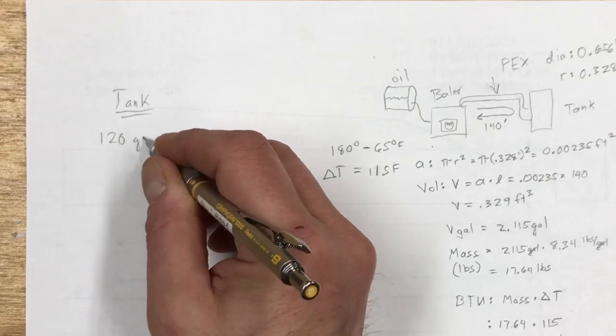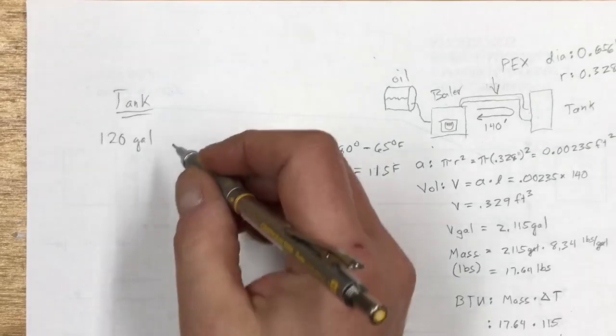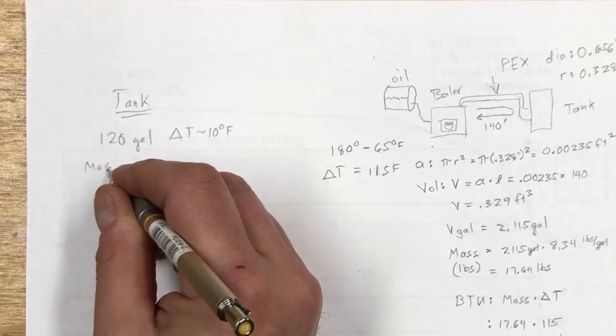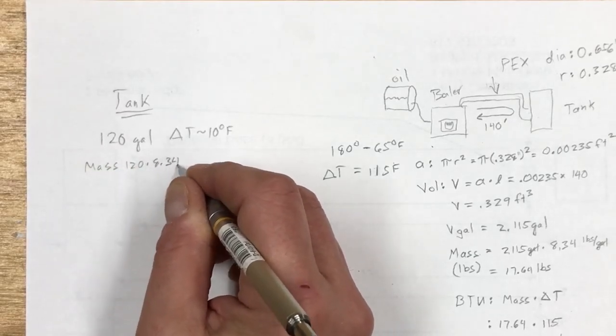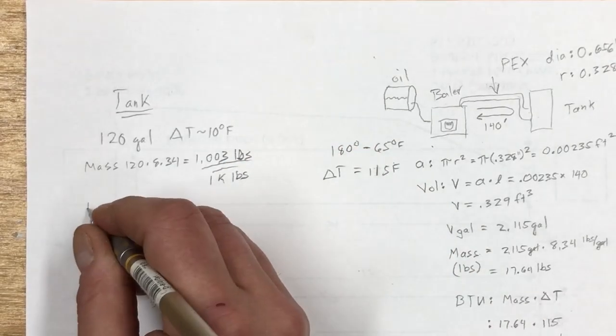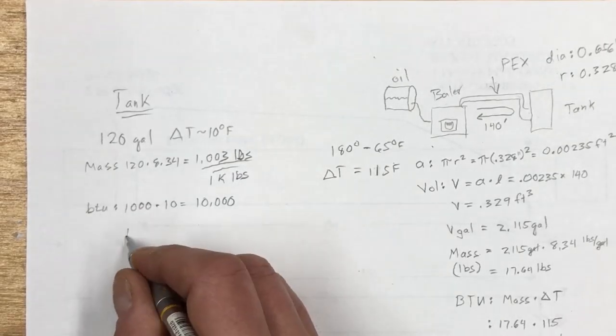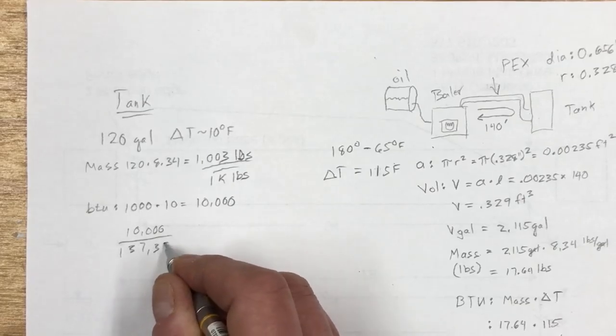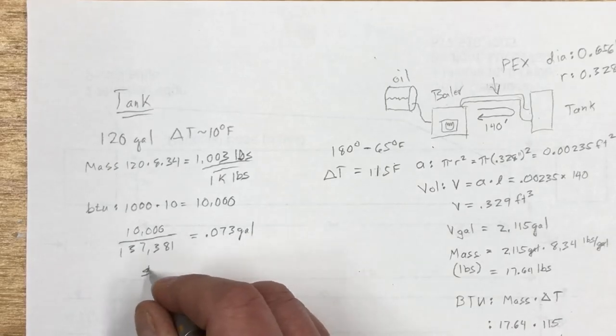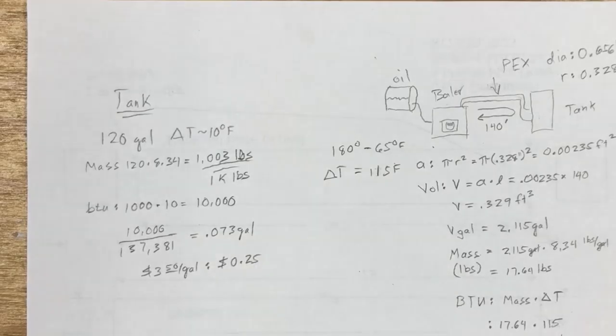So over here let's talk about the tank. It's 120 gallons and from what I understand the boiler will turn on and top it off for a delta T of about 10 degrees, again this is all fahrenheit. So the mass of the water in the tank is 120 times 8.34 which equals one thousand and three pounds and I'm going to round that up to thousand pounds. So the BTU would be a thousand times delta T of 10 is obviously ten thousand. And if you divide ten thousand into one hundred and thirty seven thousand three hundred and eighty one BTU in a gallon you end up with 0.073 gallons. And again at three dollars and fifty cents per gallon that turns out to be zero point two five dollars or 25 cents.